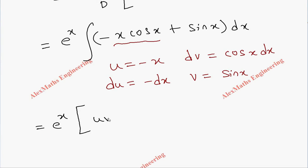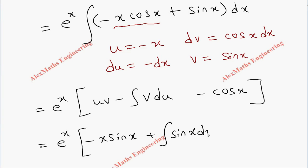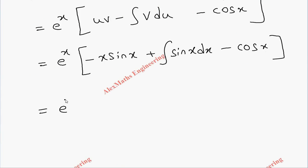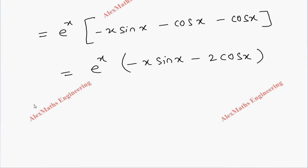Applying the formula: u·v - integral(v·du) = -x·sin(x) minus the integral of sin(x)·(-dx) = -x·sin(x) + integral(sin(x) dx) = -x·sin(x) - cos(x). Adding the integration of sin(x) from the second term gives another -cos(x). Combining, the particular integral is e^x·(-x·sin(x) - 2·cos(x)).